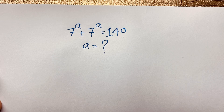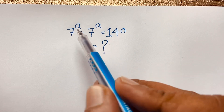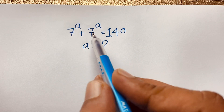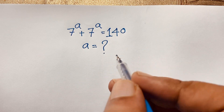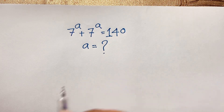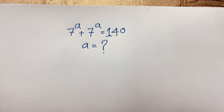Hello everyone. How to solve this exponential math problem? It is a German Math Olympiad question. 7 to the power a plus 7 to the power a is equal to 140. We are finding out what is the value of a in this exponential problem.